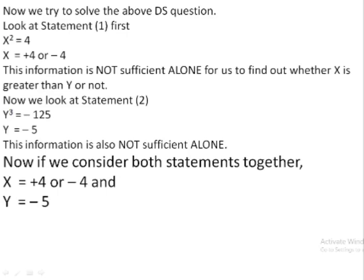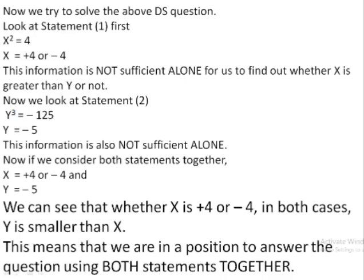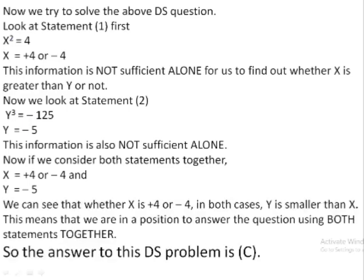Now, if we consider both statements together, we know that X is either plus 2 or minus 2 and Y is minus 5. So now we know that Y is smaller than X — whatever the value of X is, because in both cases Y is smaller than X. It means that both statements, taken together, are sufficient for us to answer the question. So the answer to this problem is C.